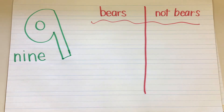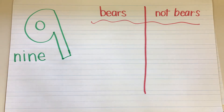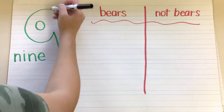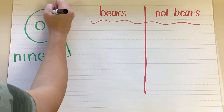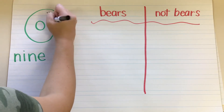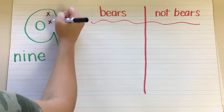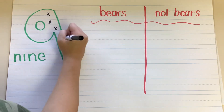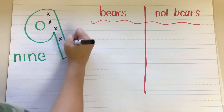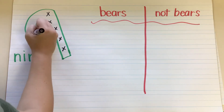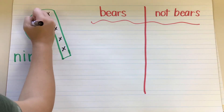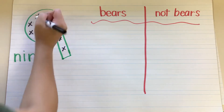I'm going to draw X's inside my number 9 so that we can count to 9 today. Count with me as I write an X. 1, 2, 3, 4, 5, 6, 7, 8, 9.